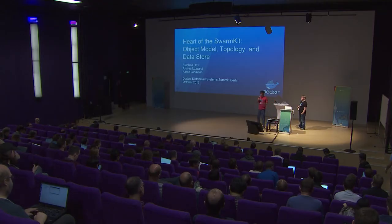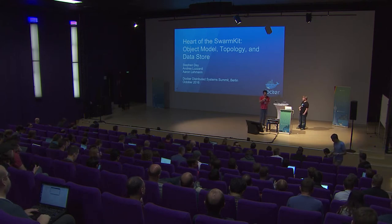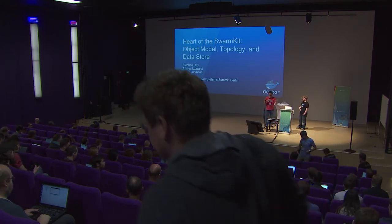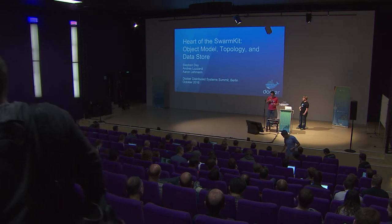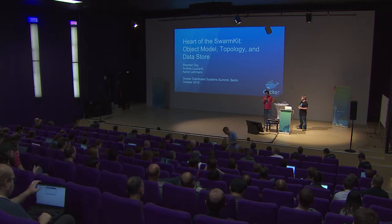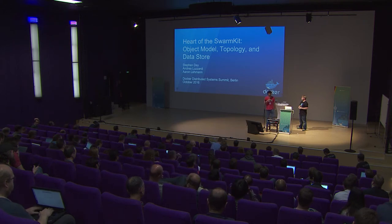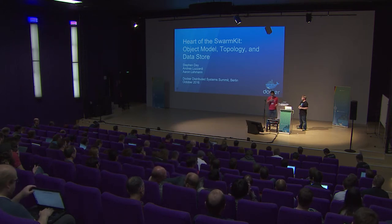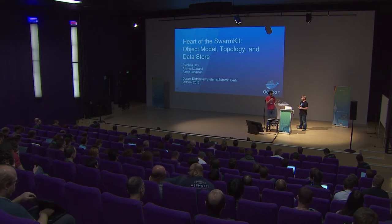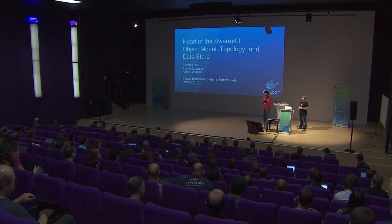The next topic is SwarmKit. Last June, we introduced orchestration in Docker Engine, and the plumbing component corresponding to it is called SwarmKit. You can find it on GitHub. Stephen is going to talk first about the data model in SwarmKit.